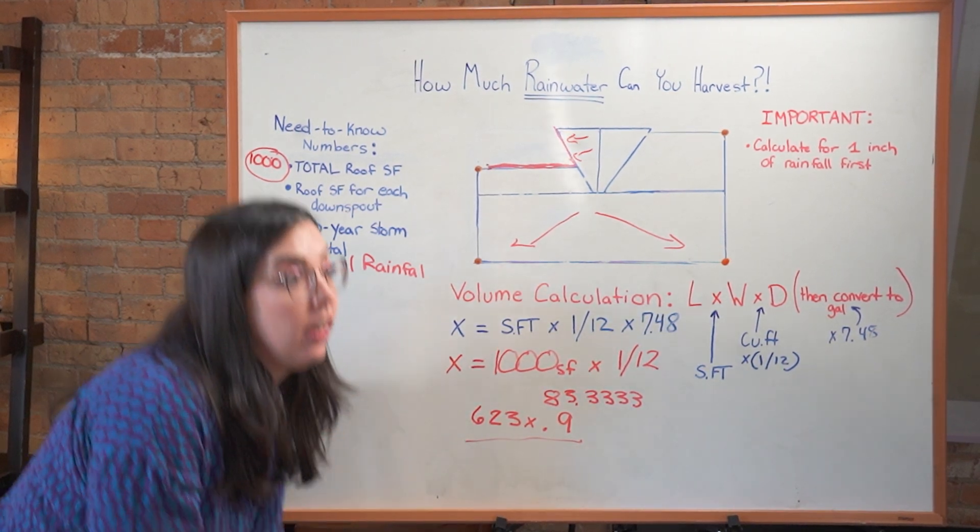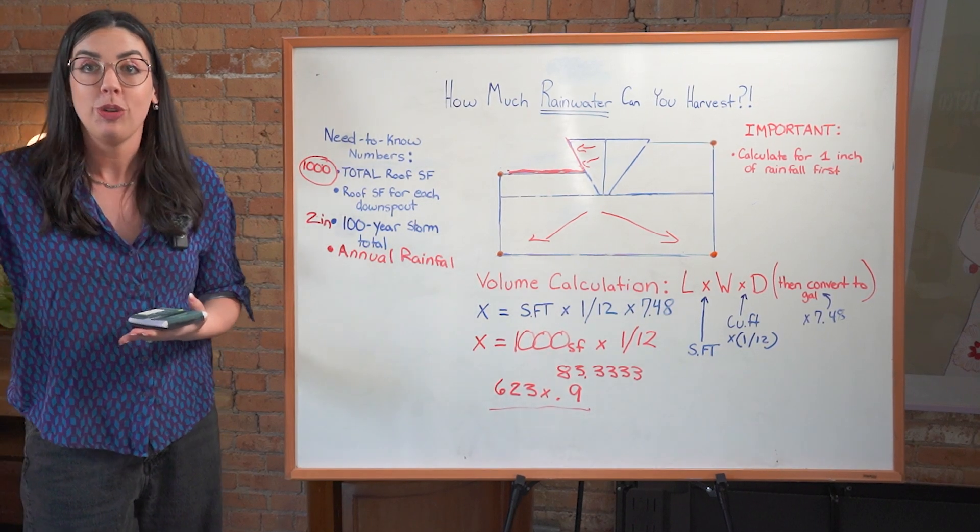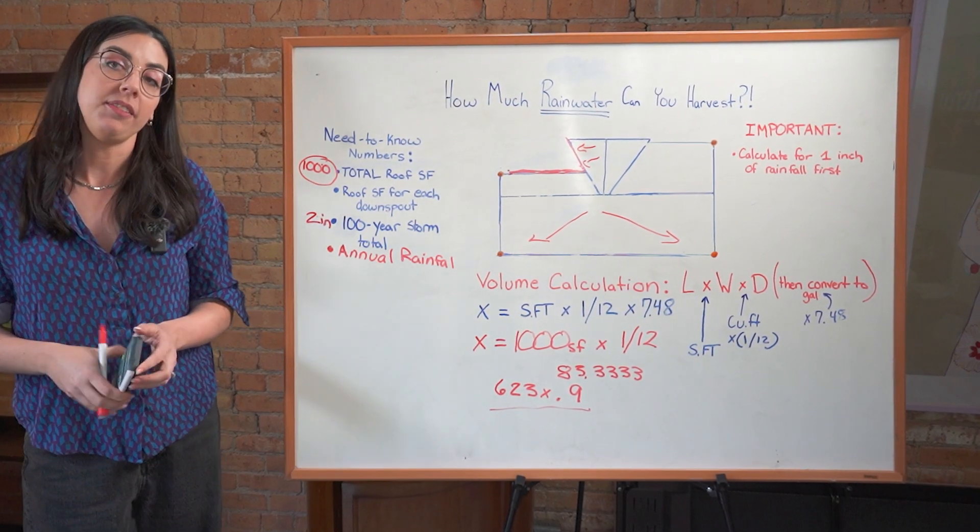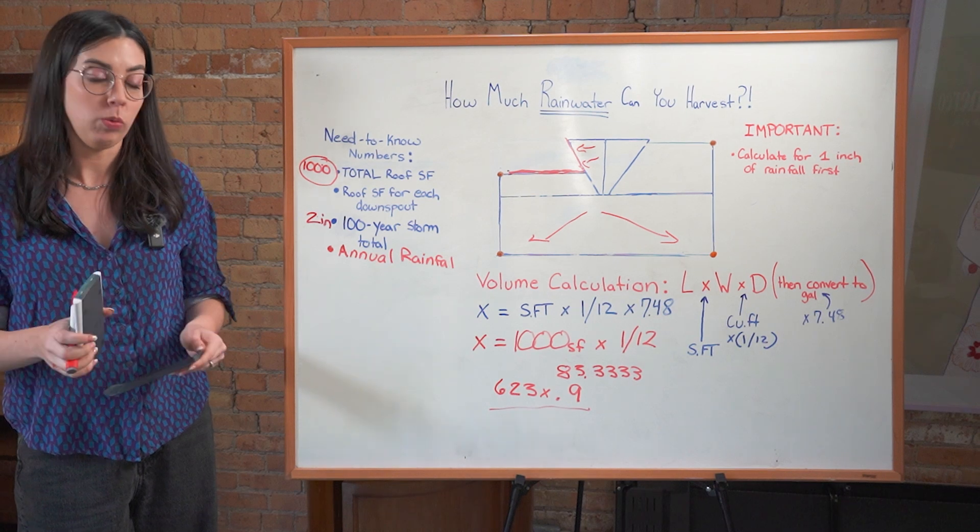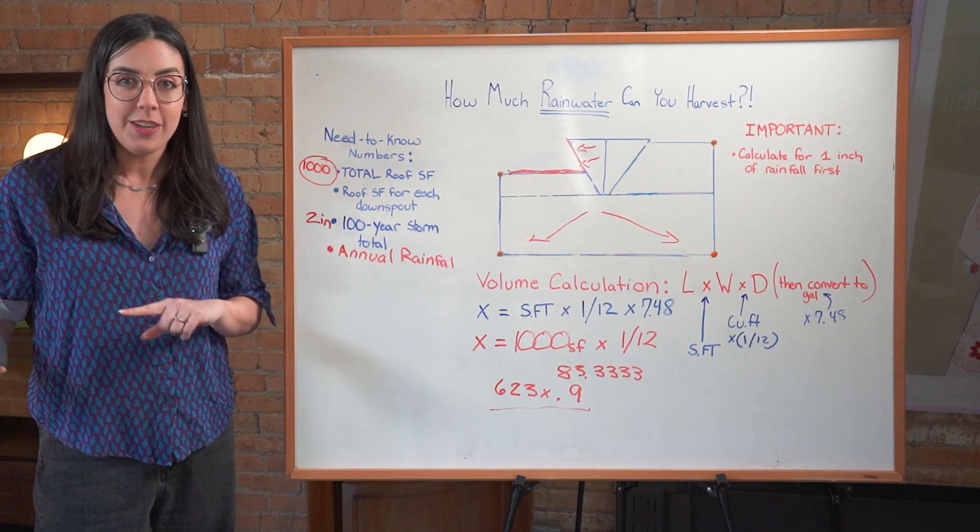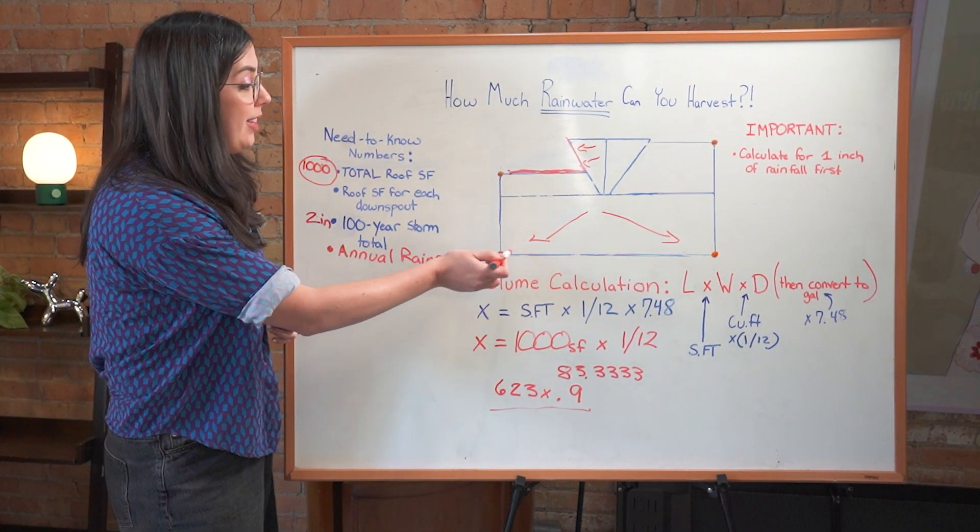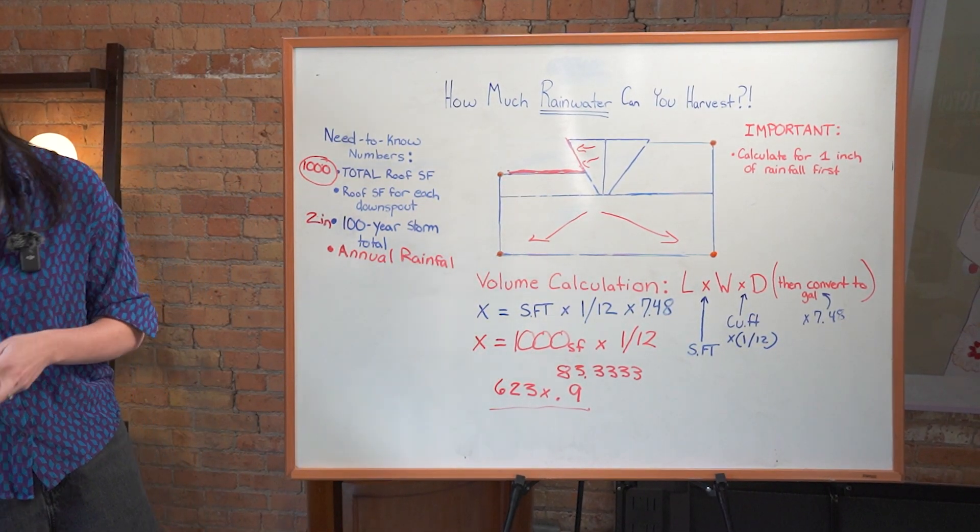And that's one inch of rain. What happens if you have a peak storm event? What happens if you want to capture multiple storms in a row? You're going to probably need more active harvesting capacity than 1 55 gallon rain barrel, or you need to do passive harvesting, which we talk about in other videos.